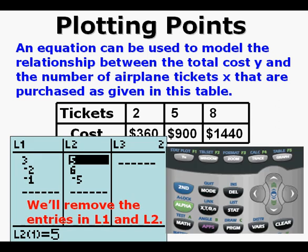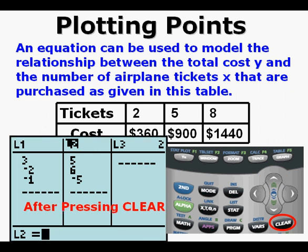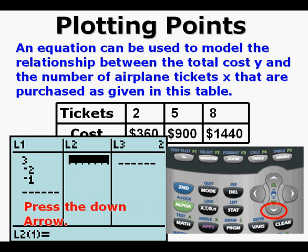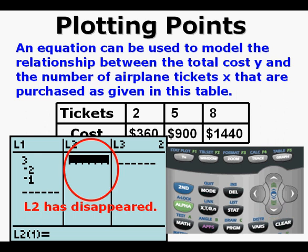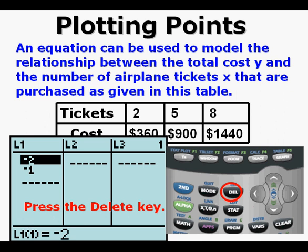We'll remove the entries in L1 and L2. We get back to our list by pressing STAT, then ENTER. Arrow up to L2, press the CLEAR key. After pressing CLEAR and the down arrow, List 2 has disappeared. Now arrow to the left to get to List 1. Instead of going to the very top of the column, we can just press the DELETE key. By pressing the DELETE key three times, we have deleted each of the three entries in List 1.